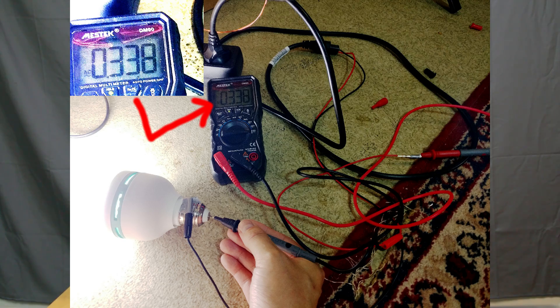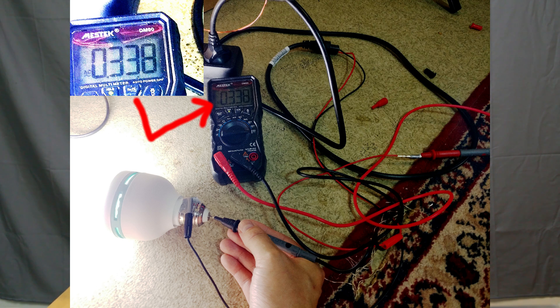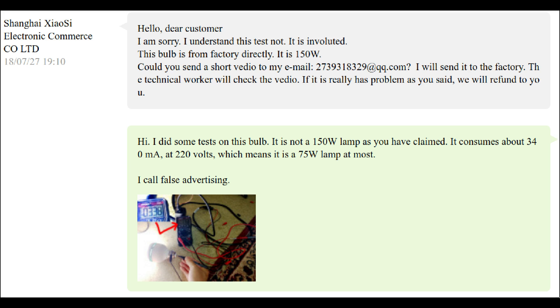I contacted the seller and showed them this photo showing my measurements. And they replied saying, 'Hello dear customer, I am sorry, I understand this test not. It is involuted. This bulb is from factory directly. It is 150 watts. Could you send a short video to my email? I will send it to factory. The technical worker will check the video. If it really has problem, as you said, we will refund you.'